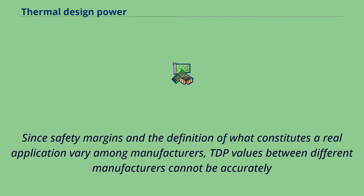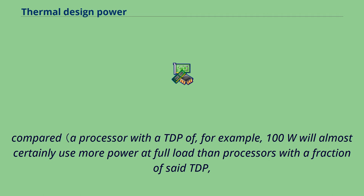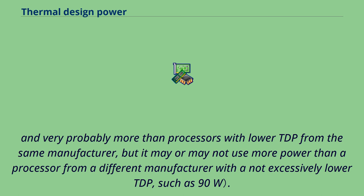Since safety margins and the definition of what constitutes a real application vary among manufacturers, TDP values between different manufacturers cannot be accurately compared. A processor with a TDP of, for example, 100W will almost certainly use more power at full load than processors with a fraction of said TDP, and very probably more than processors with lower TDP from the same manufacturer, but it may or may not use more power than a processor from a different manufacturer with a not excessively lower TDP, such as 90W.